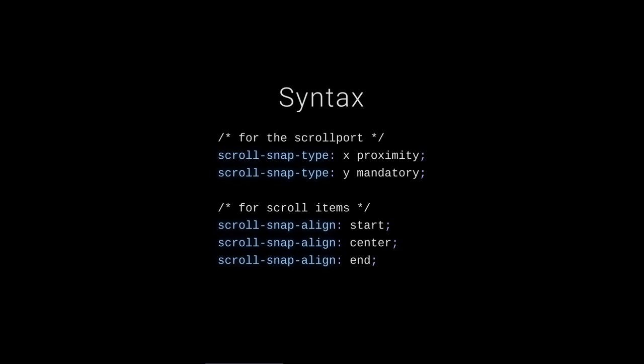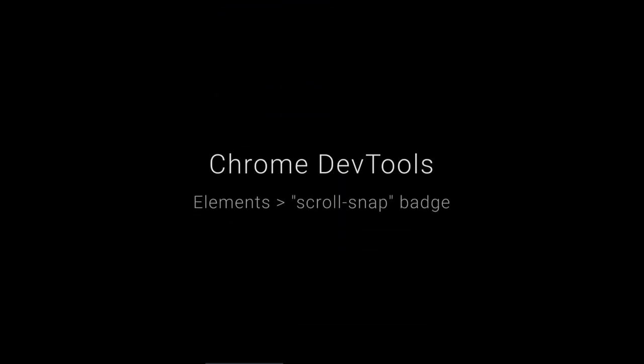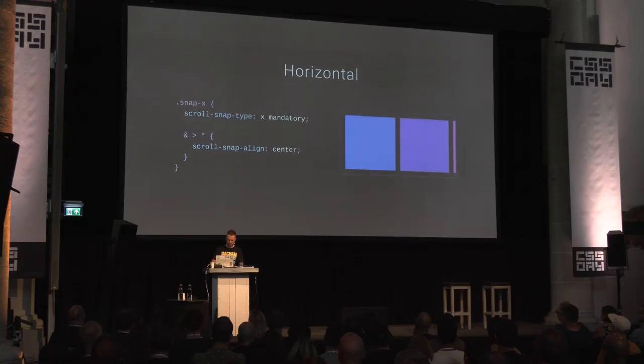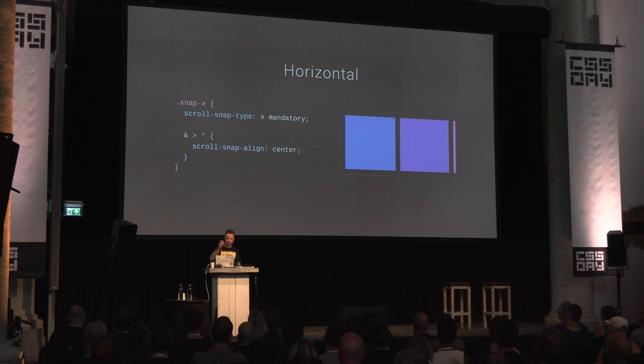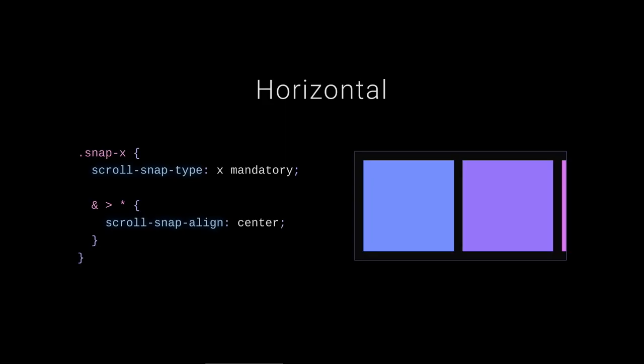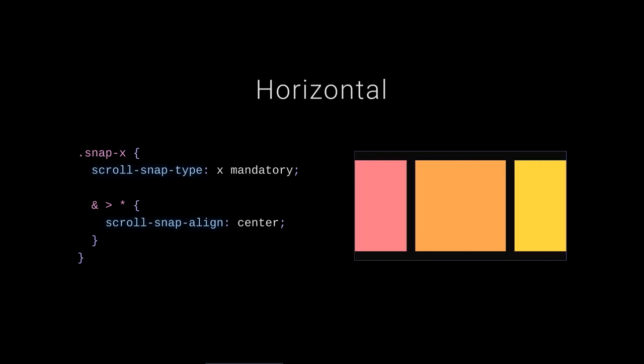On scroll items — the children inside the scroll port — you can choose to snap them aligned to the start, center, or end. And not many of you may know that Chrome DevTools has scroll snap debugging tools that look really rad. Here's your classic scroll snap scenario: scroll-snap-type: x mandatory on the scroll port, and scroll-snap-align: center on every child. It snaps in the center — pretty cool.